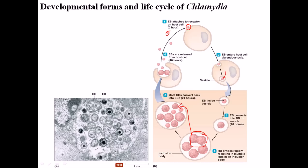Why produce elementary bodies, convert them to reticulate bodies, and then reconvert back? The elementary bodies function like spores for Chlamydia. Just as bacterial spores are produced under stress, survive harsh conditions, and revert to vegetative cells in favorable conditions, Chlamydia uses elementary bodies for infectivity to enter the host cell, grows into reticulate bodies inside, and then converts back to elementary bodies when ready to be released into the environment.